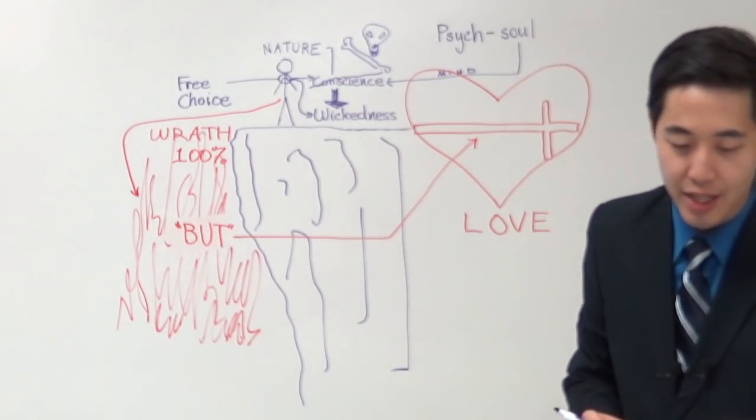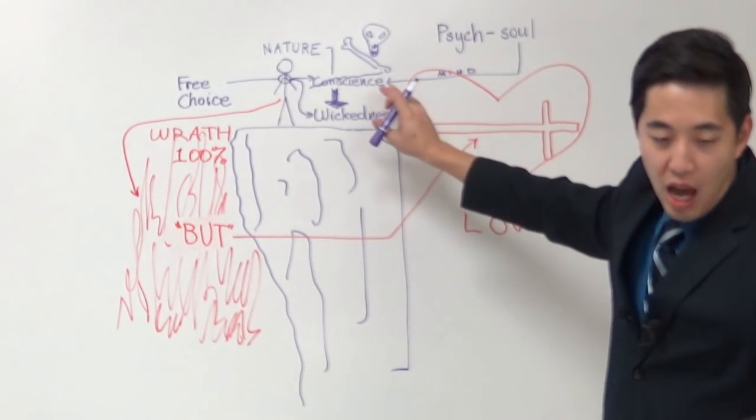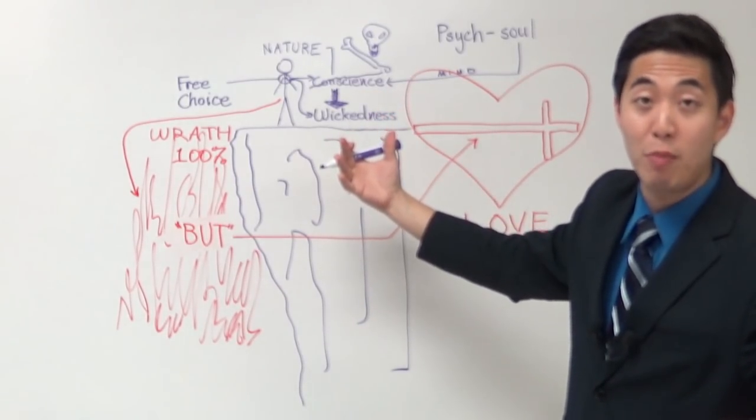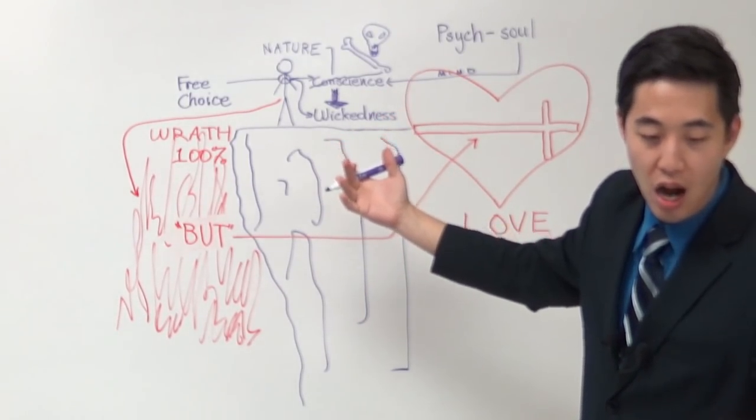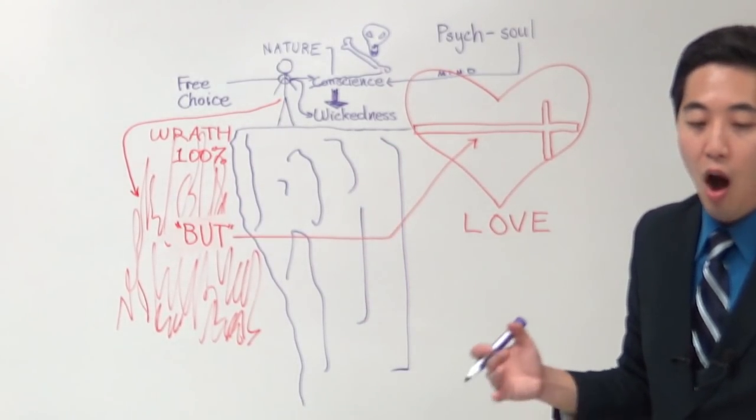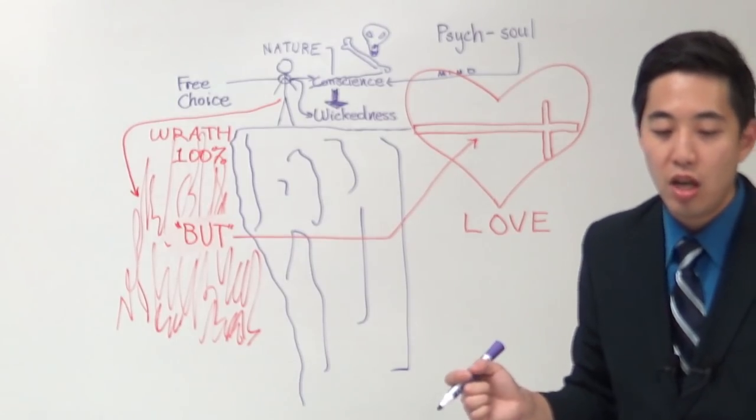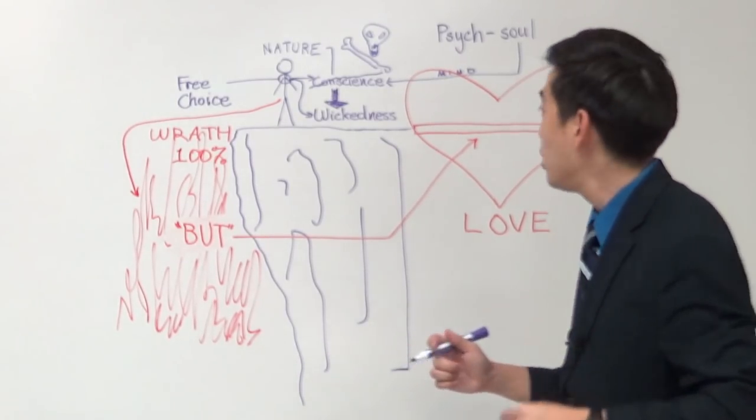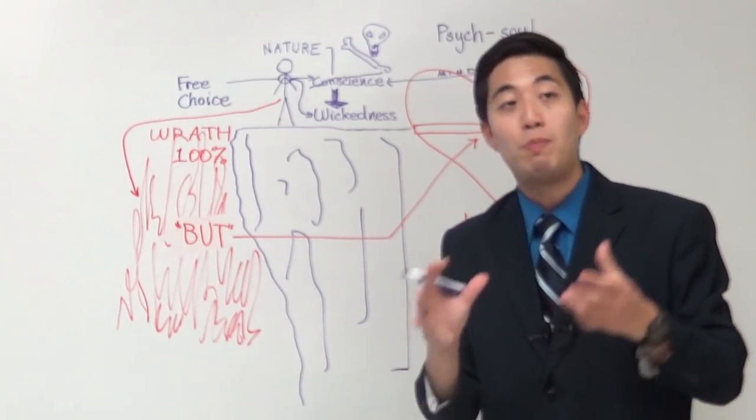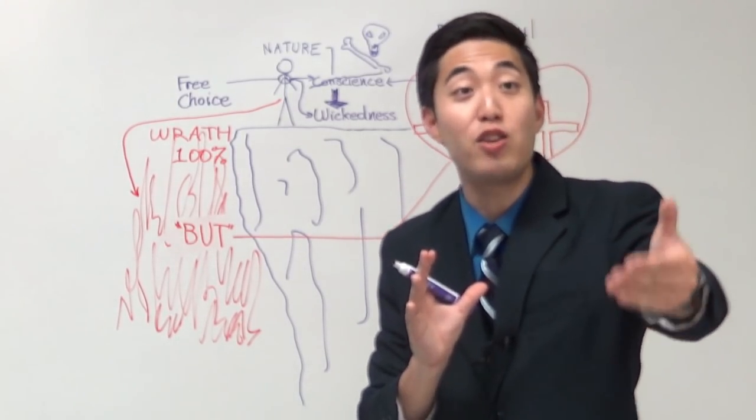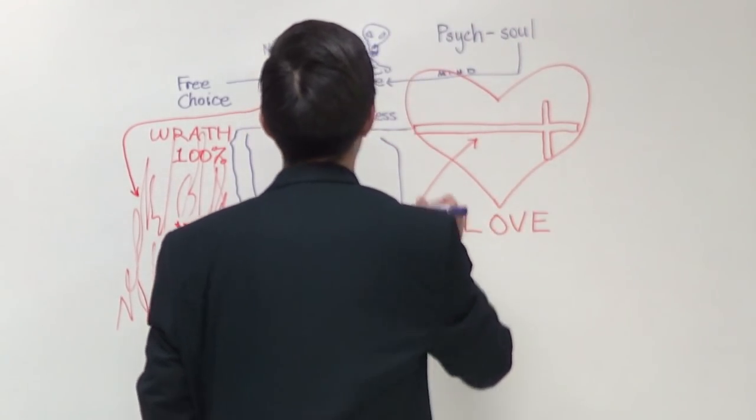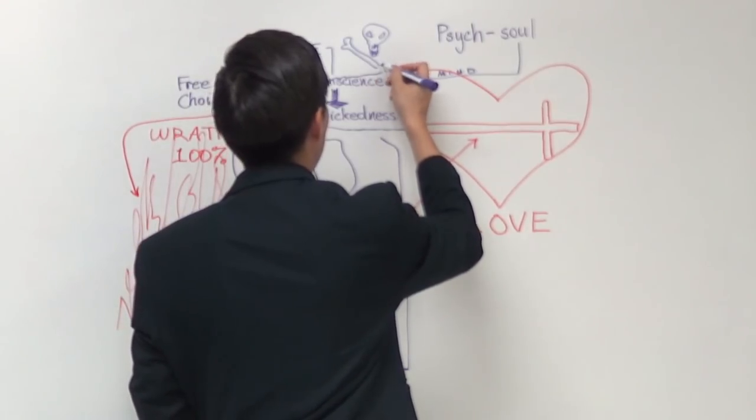Even when we were dead in sins, hath quickened us together. God made you alive. Quicken means to make alive, us together with Christ. Now did you notice that? He quickened us together with Christ. Jesus Christ, He is alive. So because He is alive, He's able to make you alive together with Him. This is something that's going to be a big blessing. You ready for this? This is incredible.